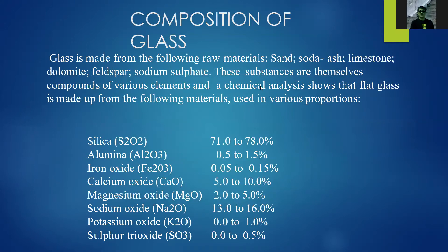The composition of glass includes raw materials such as sand, soda ash, limestone, dolomite, feldspar, and sodium sulfate. A chemical analysis shows that flat glass is made up of: silica 71 to 78 percent, alumina, iron oxide, calcium oxide about 5 to 10 percent, magnesium oxide, sodium oxide about 13 to 16 percent, and potassium oxide, sulfate, and sulfur dioxide. Silica and sodium oxide are the dominant components.